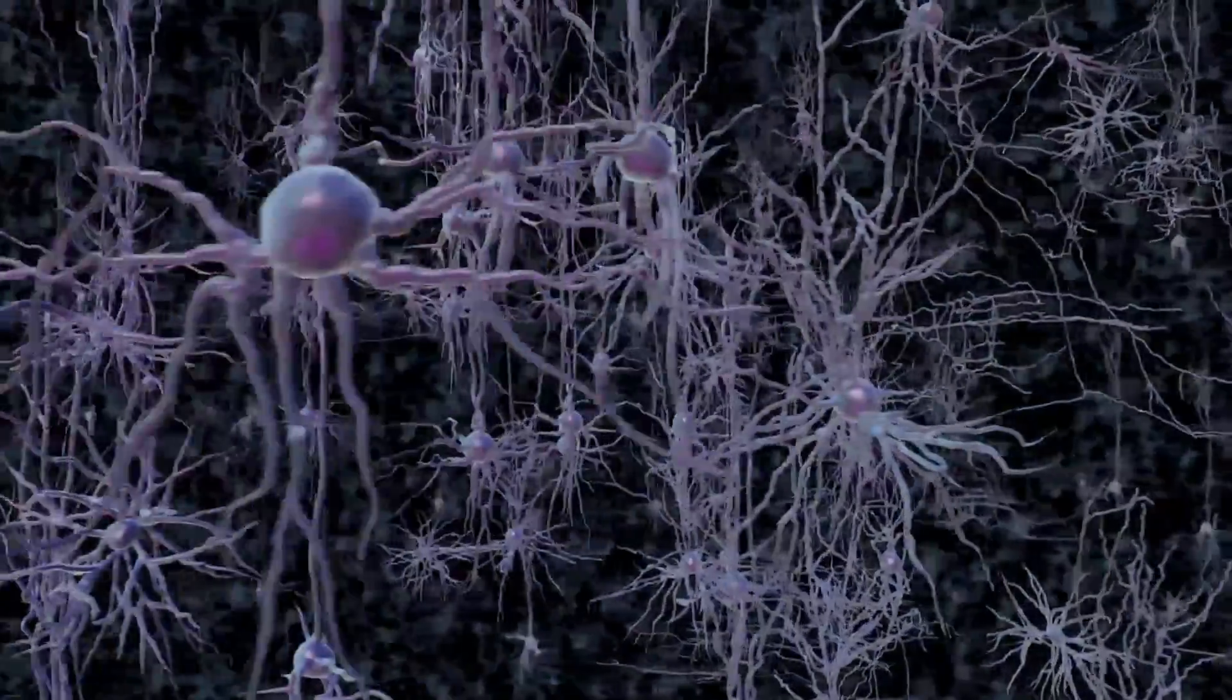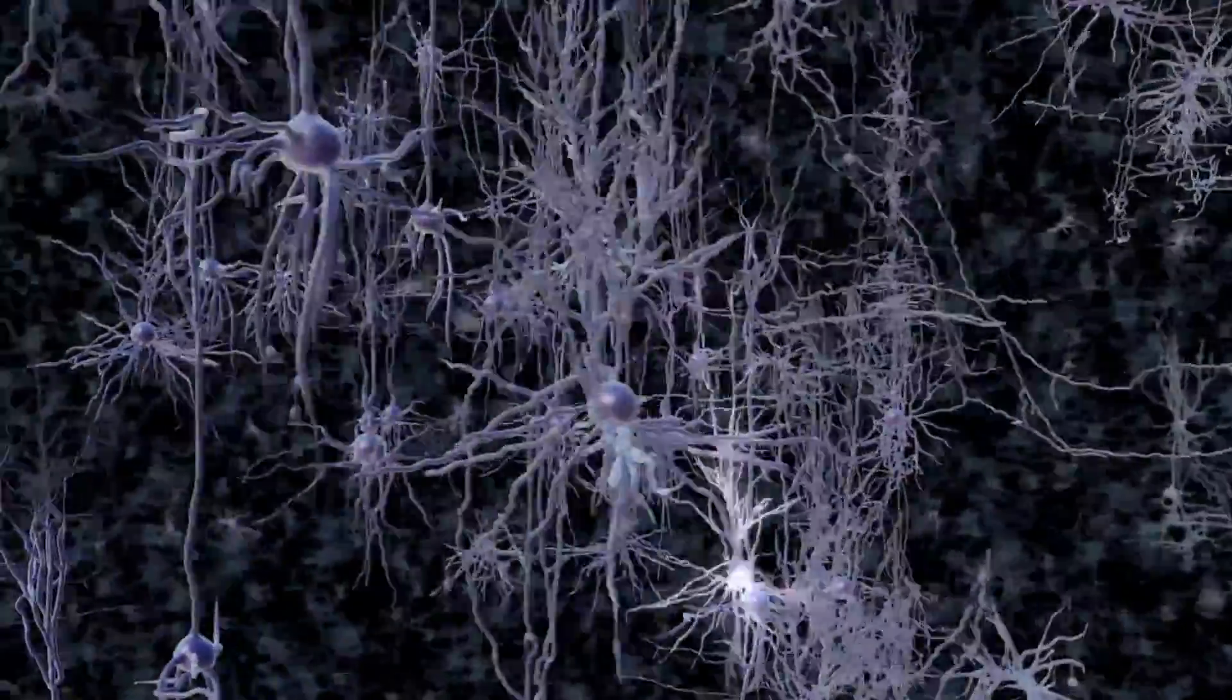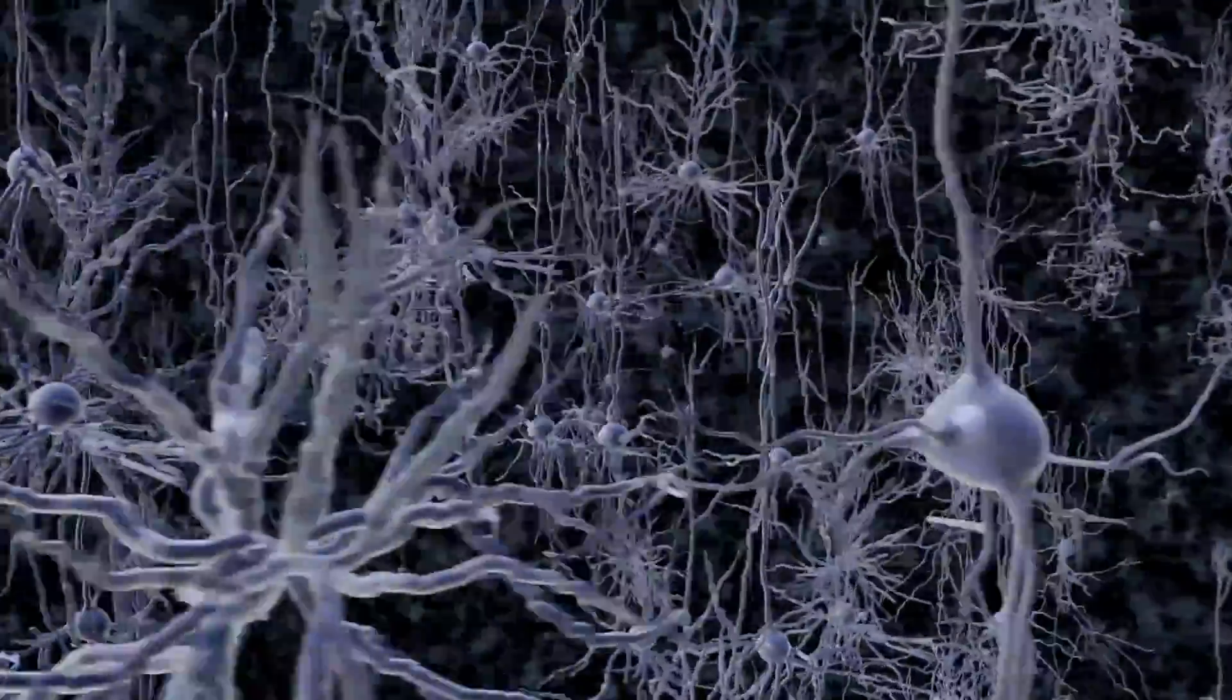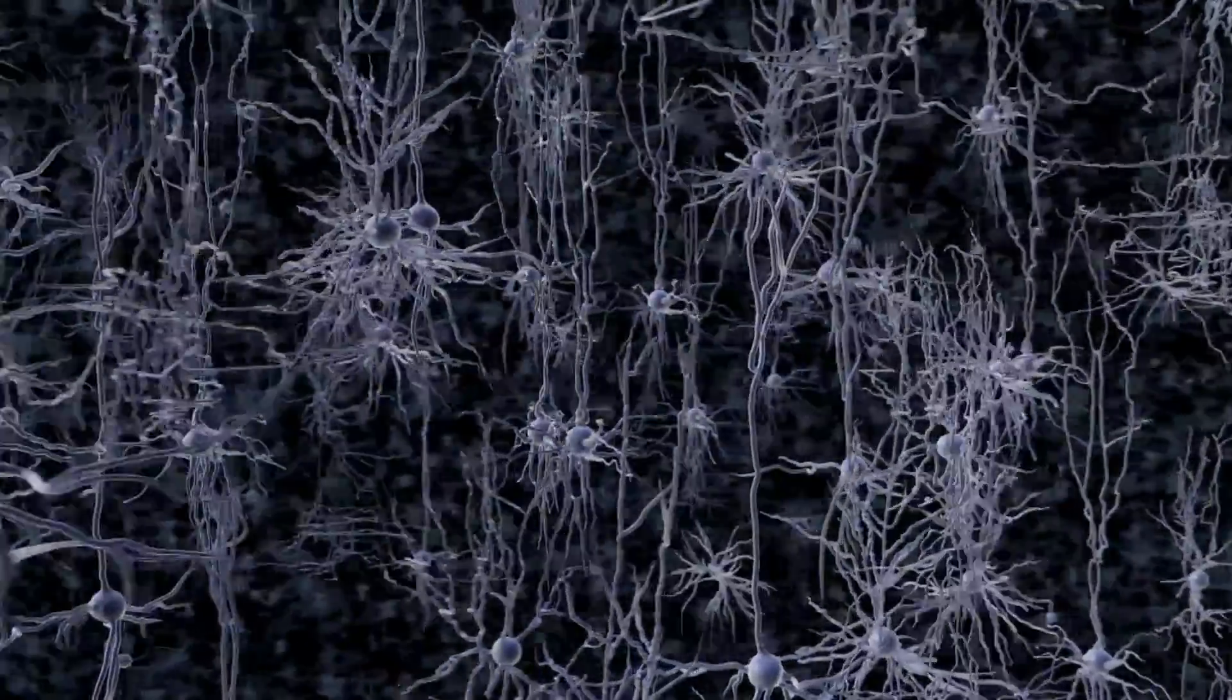Neurons come in thousands, perhaps tens of thousands of different kinds, each with a unique shape, a distinct molecular composition, and a unique pattern of connections within the brain.